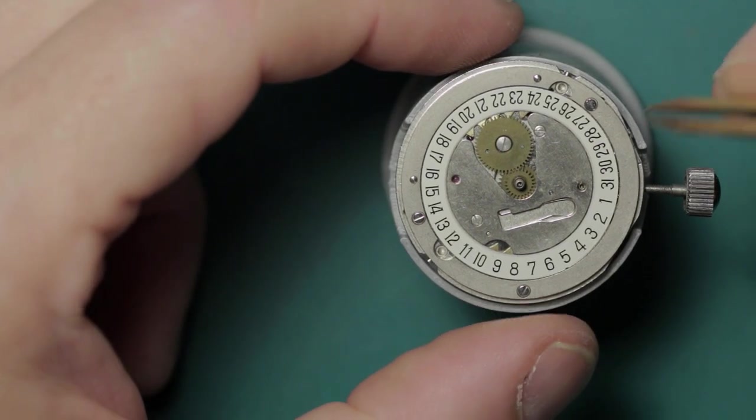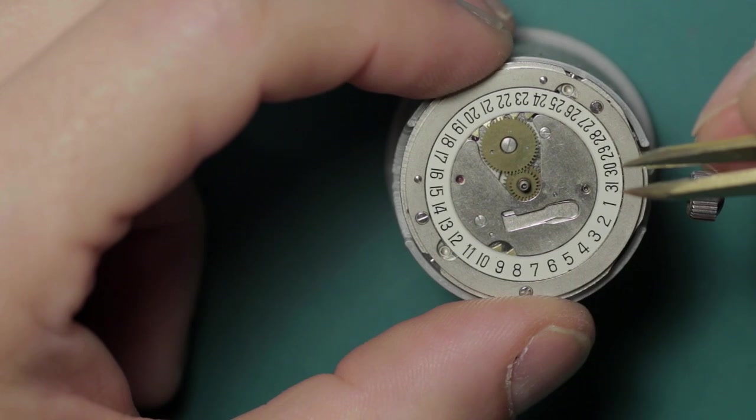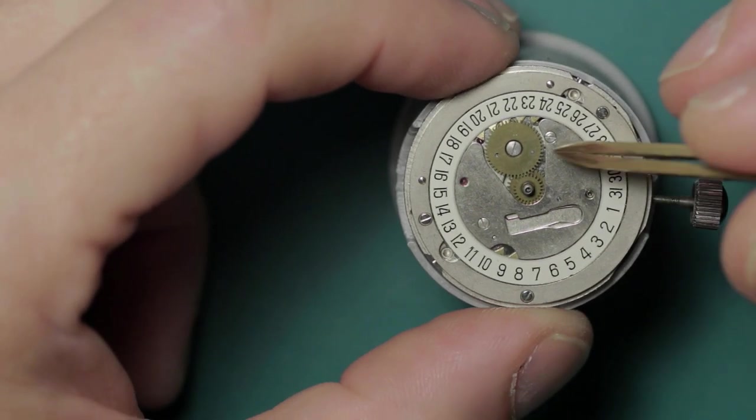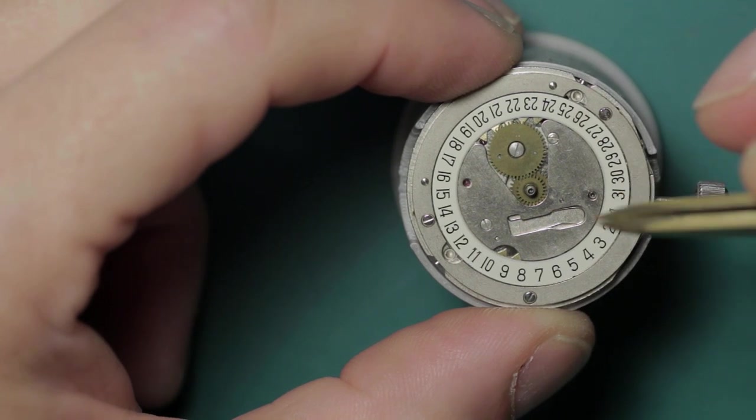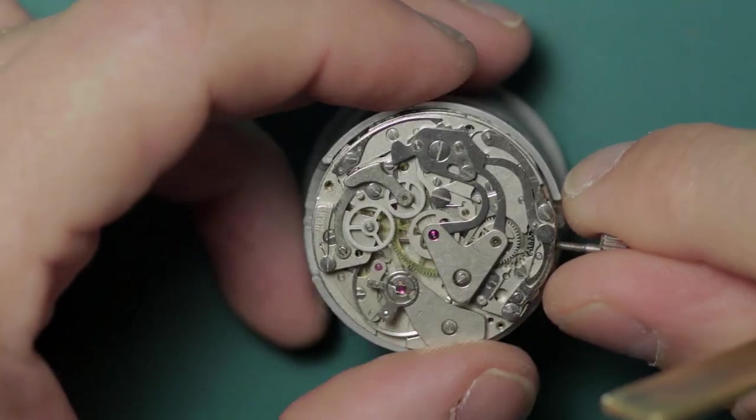The 7733 is much like this but without the calendar complication. The 7734 has the calendar module on the front and this is the one that all the 3133s are based on. There's also another Poljot caliber which is based on the 7736 if memory serves, and that one has an additional subdial with a 24-hour counter.